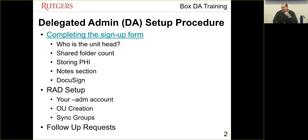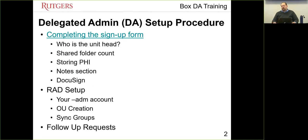For example, if you're storing PHI in Box, that needs to be in a separate account from your other data. If you don't mind the extra restrictions PHI brings, you can store everything in one PHI folder. The notes section is where you can give us any additional information — for example, if you want two other people set up as delegated admins to the shared account. The DocuSign process is part of this: once you enter your unit head's information, they'll get an email and need to sign it, or your delegated admin account will not be created.